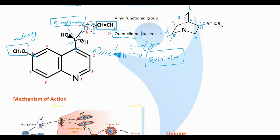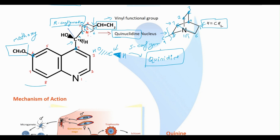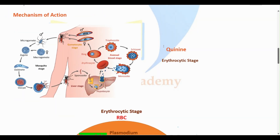We can also draw the structure in a different way — in an open booklet form. It starts from the nitrogen, then C2, C3, C4, C5, C6, then diagonally C7, C8, and C9. Attached to the C5 position you will find a vinyl functional group — CH double bond CH2 — which is a vinyl functional group. That is the structure of quinine.